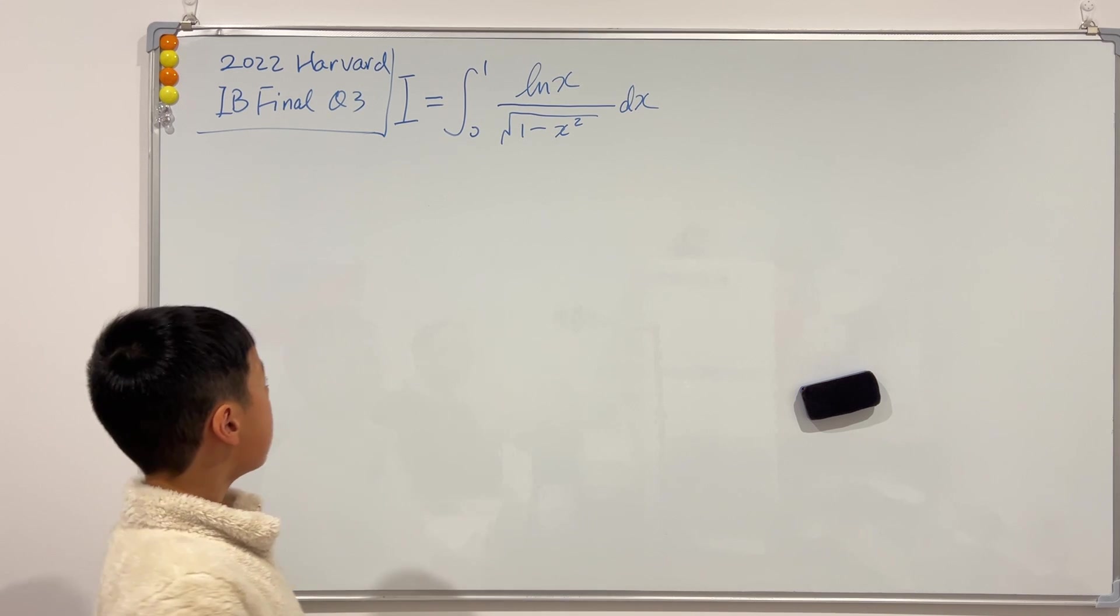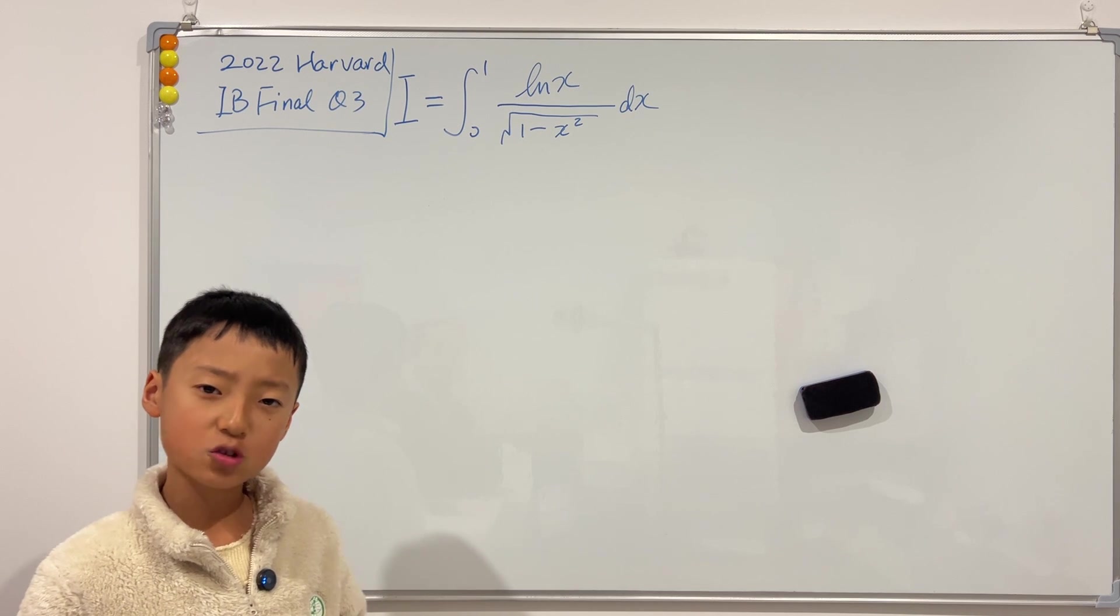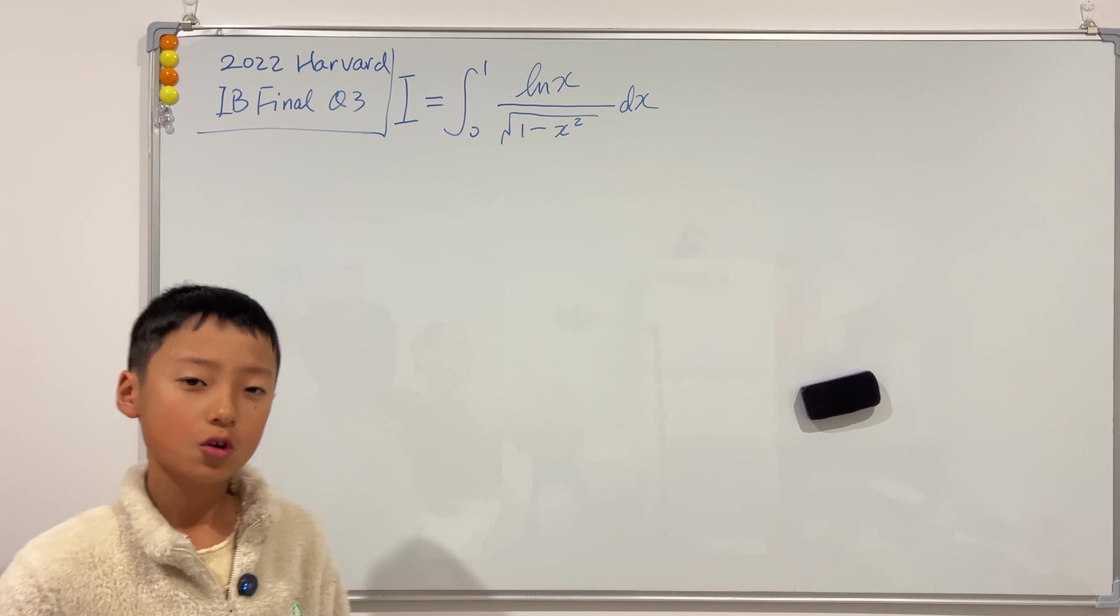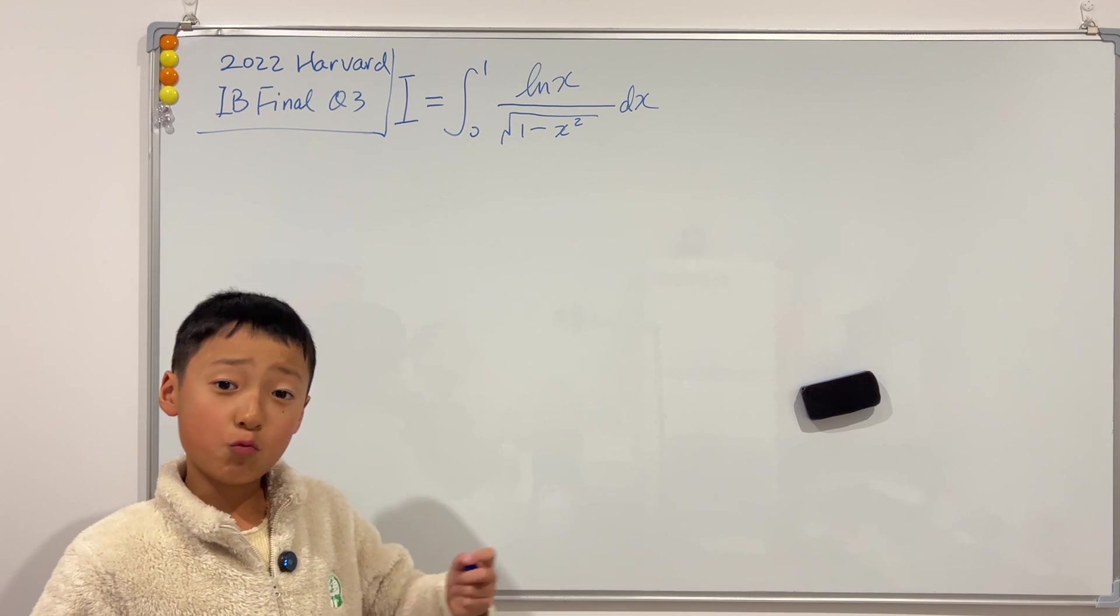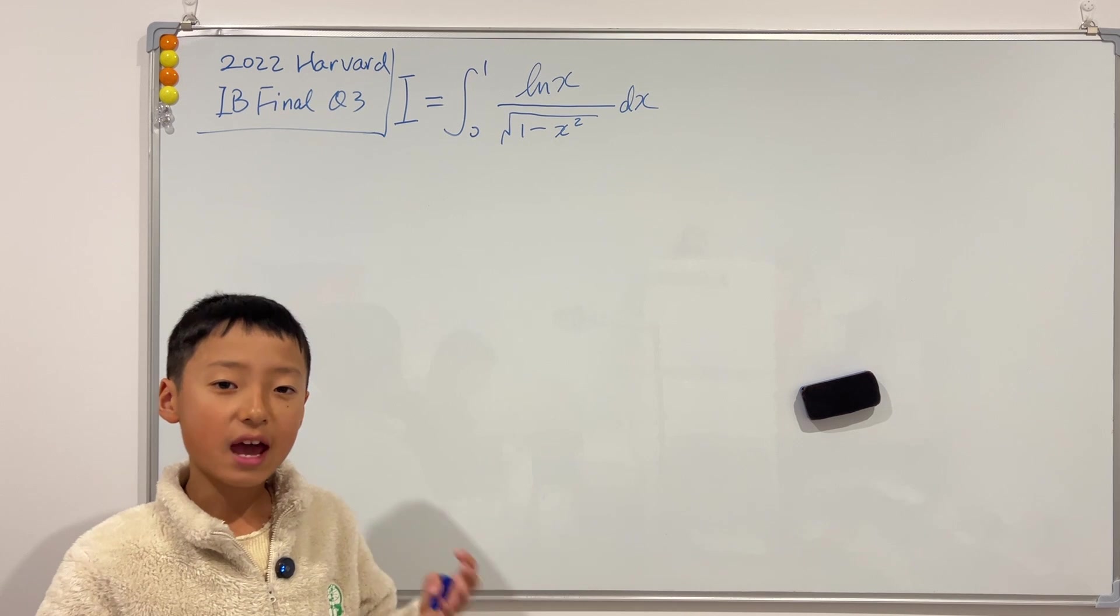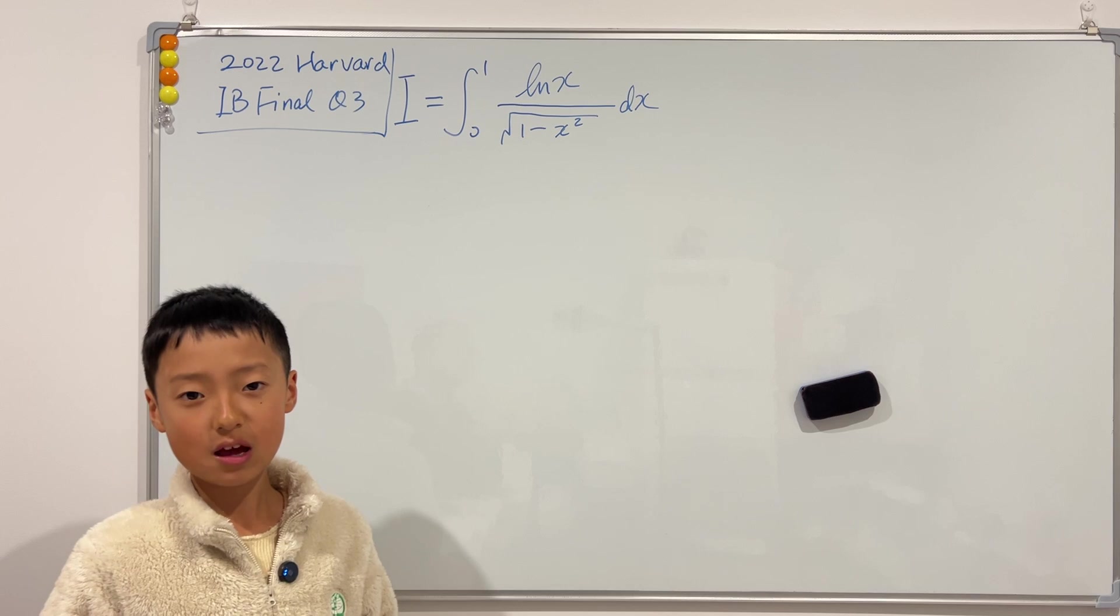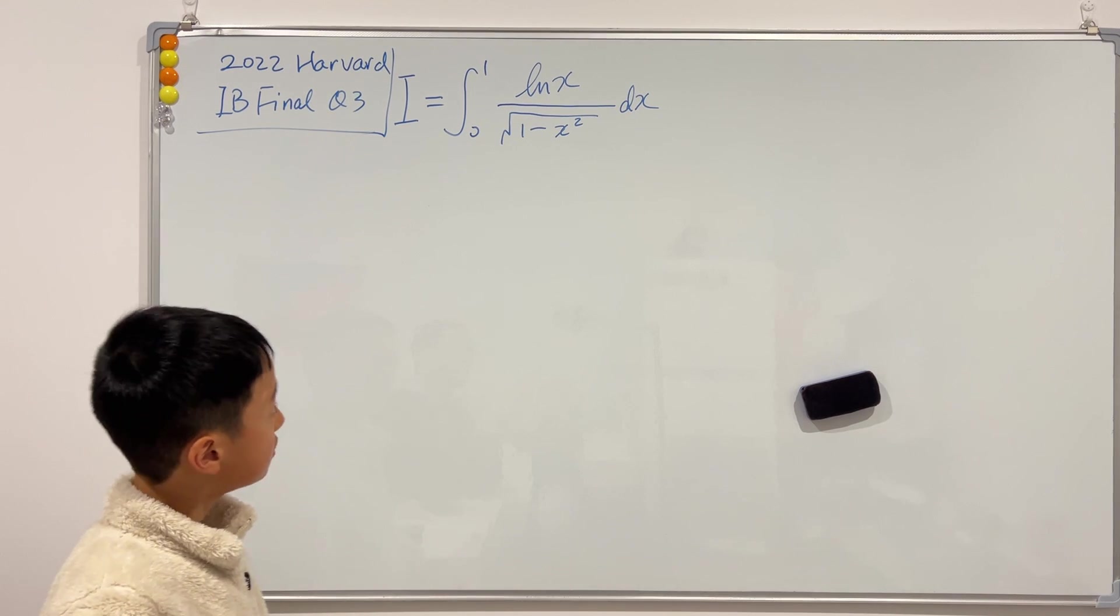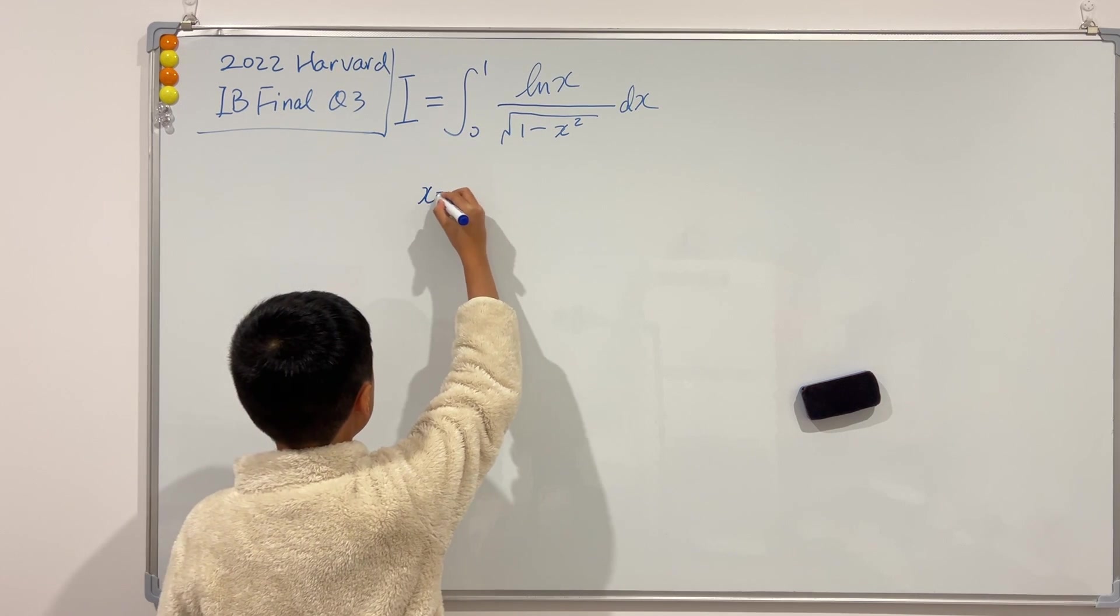We're actually going to use trig substitution to solve this question. But what should we let x to be? Well, if you can tell on the denominator, we have square root of 1 minus x squared. So this implies that we should let x to be sine of something. I'm going to use t in this case, because later in the video we're going to use u.